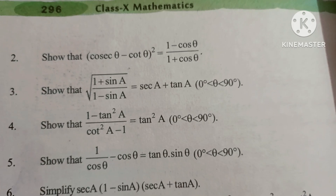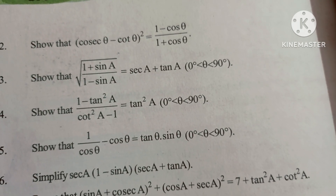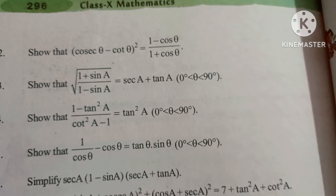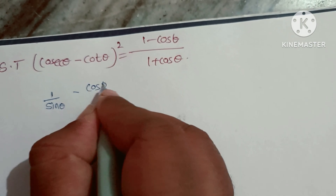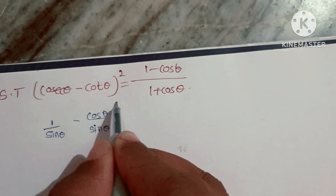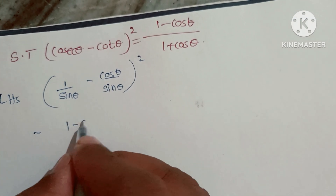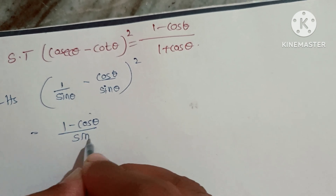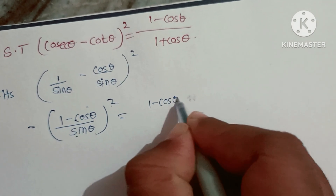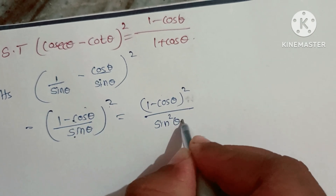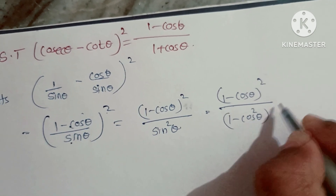Second bit: Show that (cosecθ - cotθ)² = (1 - cosθ)/(1 + cosθ). Write cosecθ = 1/sinθ and cotθ = cosθ/sinθ. Take LCM sinθ, so LHS = ((1 - cosθ)/sinθ)². This equals (1 - cosθ)² / sin²θ. Now 1 - cos²θ = sin²θ, so sin²θ = (1 - cosθ)(1 + cosθ).